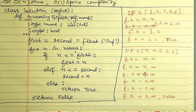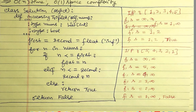When the loop runs again and the number `n` is greater than `first`, the first condition won't satisfy. We move to the second condition: if `n` is less than or equal to `second`, then `second` becomes `n`. So `second` stores the lowest number that is still greater than `first`.